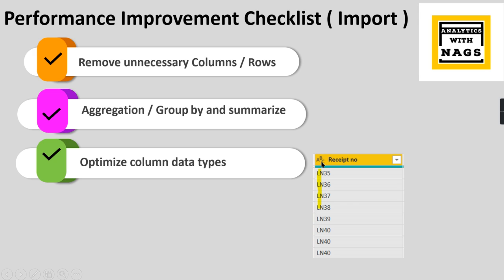You can remove these two prefix characters from the receipt number since the prefix serves no use. Obviously, if this receipt number is referenced in another table, you need to do the transformation there as well. Doing so, your model size will be drastically reduced. Removing those characters from the columns will reduce the size of your model and improve performance.